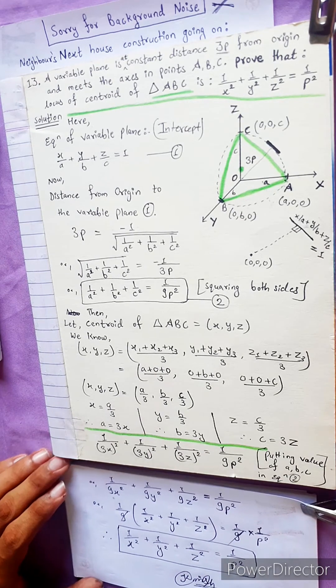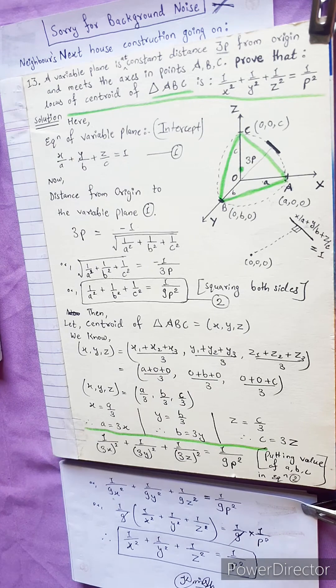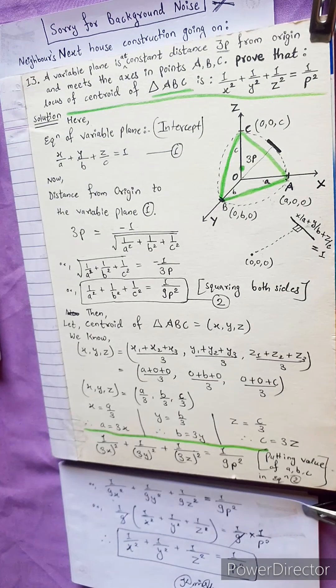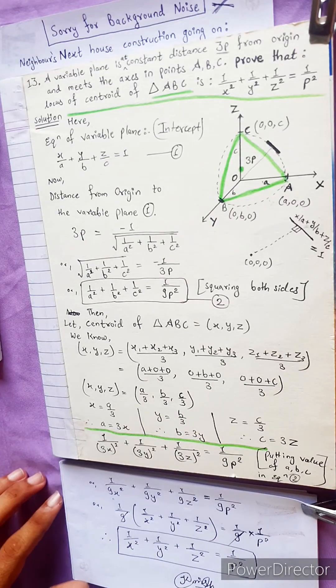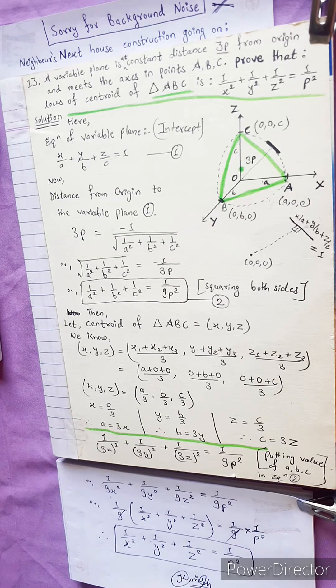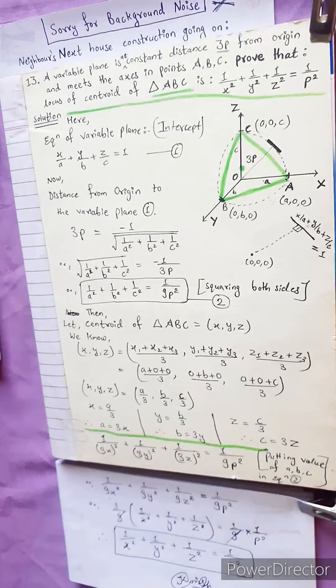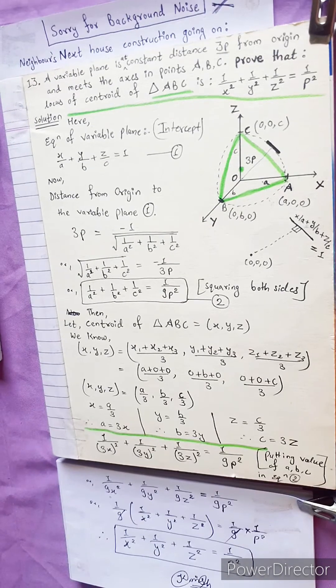The answer is 1/x² + 1/y² + 1/z² = 1/p². Bye bye and thank you.